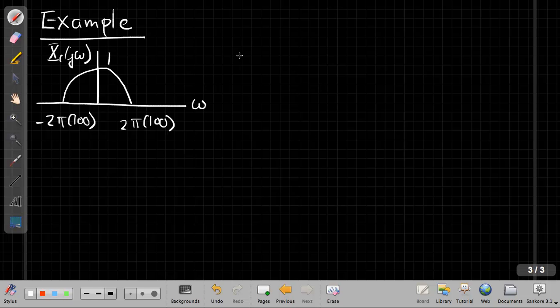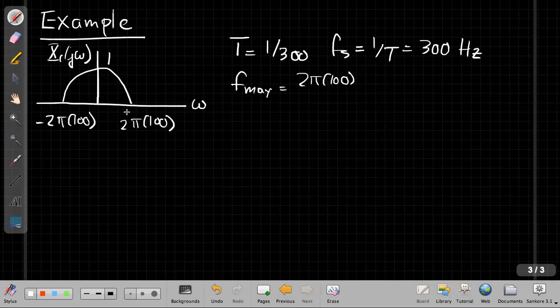And so if we're going to go through those, and imagine I sample it where T is going to be 1 over 300. Or so f_s, if I work out from that, is 1 over T, is 300 hertz. So the first quick check I do is I say, well, the maximum frequency here would be 2 pi times 100.